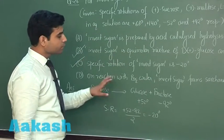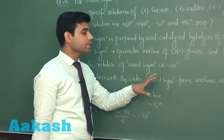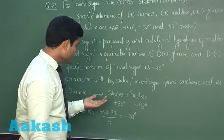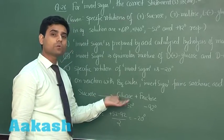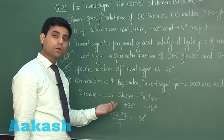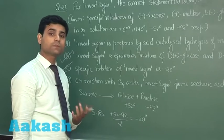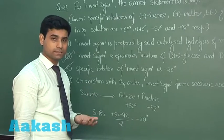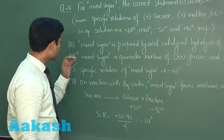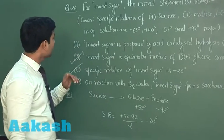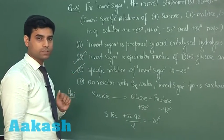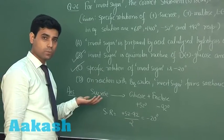On reaction with bromine water, invert sugar forms saccharic acid as one of the products — this is option D. In invert sugar we have both glucose and fructose. Glucose on reaction with bromine water gives gluconic acid, not saccharic acid. So option D cannot be the correct answer. Therefore, the correct answers for this question are options B and C. Now let us move to the next question.